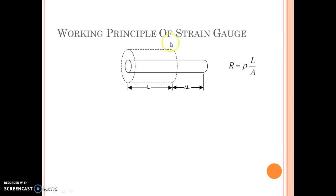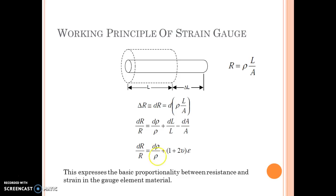Continuing with the working principle, we know that this was the original length. We have applied a force and now the length is L plus delta L. And we are aware of this formula, R is equal to rho L by A. Now if we are interested in finding by how much amount the resistance has been changed, we need to find the derivative of this rho L by A. Simplifying further, we get this. And ultimately, delta R by R is equal to d rho by rho plus 1 plus 2 mu into strain. This expresses the basic proportionality between resistance and strain in the gauge element material. So we can see how much strain we have applied, that much change in resistance per original resistance we get.